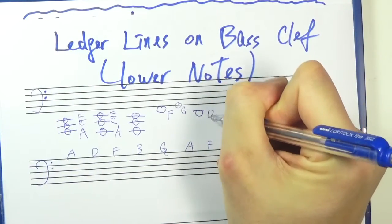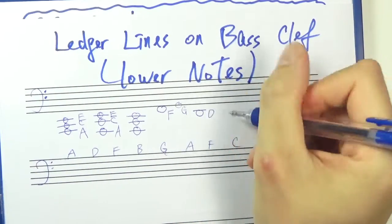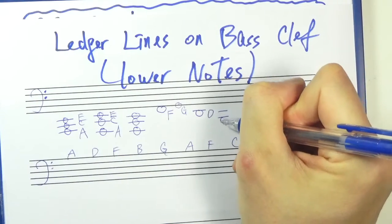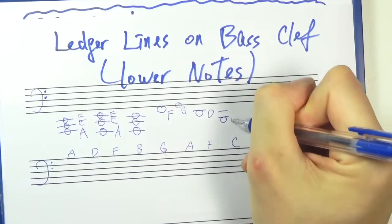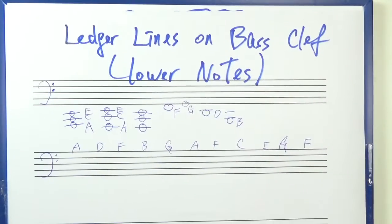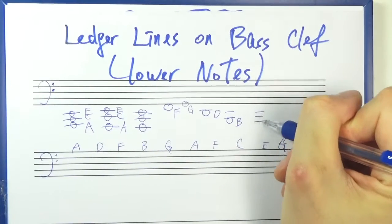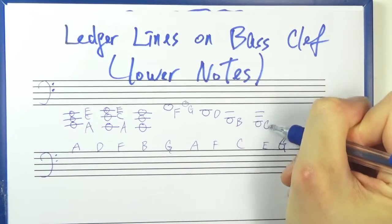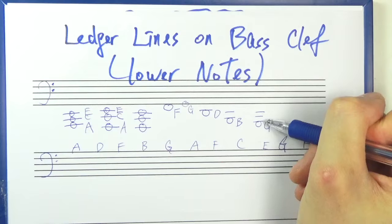This one is your D, because it's one step below your E note. This one is your B. It's one step below your C. And this one is your G. It's one step below your A note.